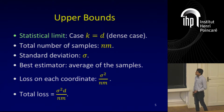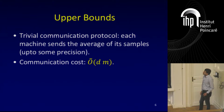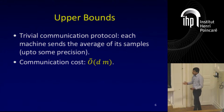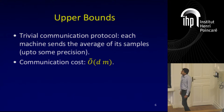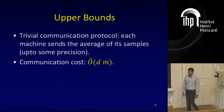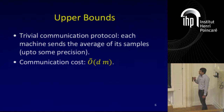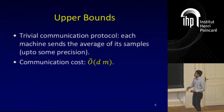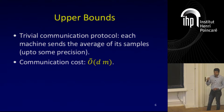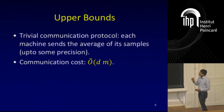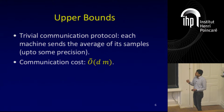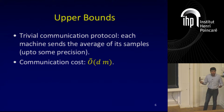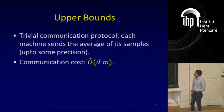This is the statistical limit when all samples are available to one machine. The trivial communication protocol when samples are distributed: each machine sends the average of its samples on the blackboard, and you take the average of these averages to compute the average of all samples. Each machine's average is a vector in R^d, so up to log factors, each machine spends d bits of communication. The total communication is d times m, and with that cost you achieve a loss of sigma squared d over nm by running this trivial averaging protocol.